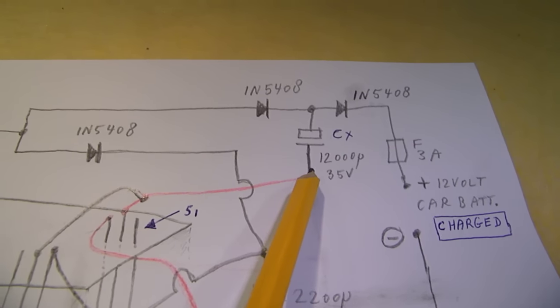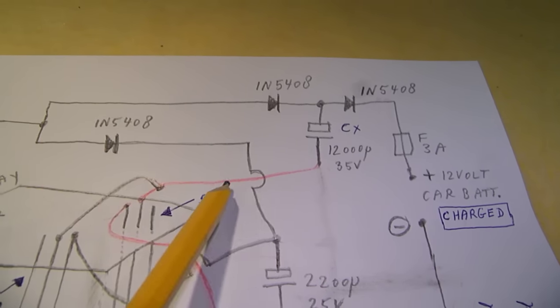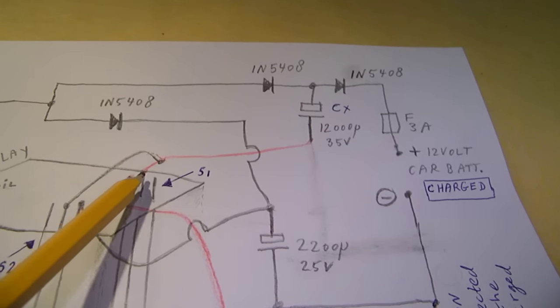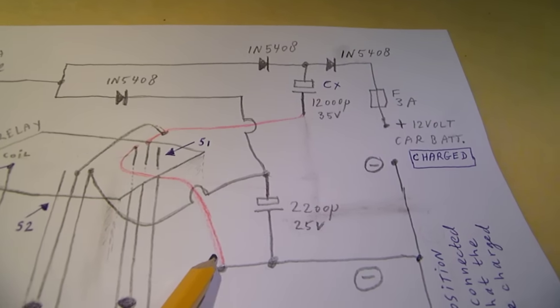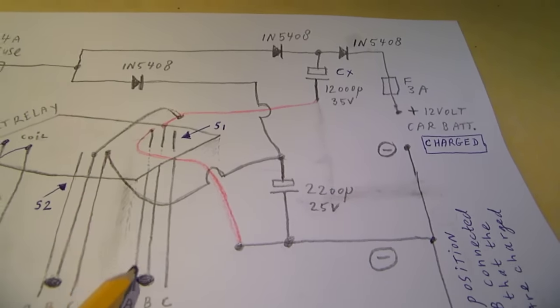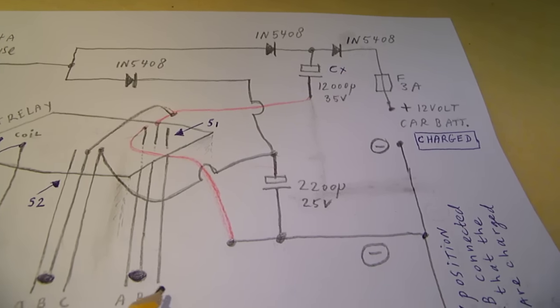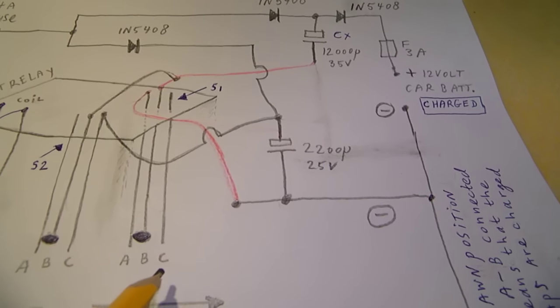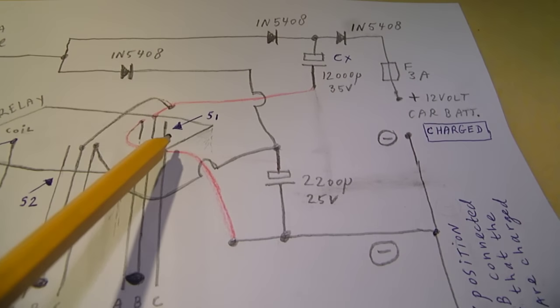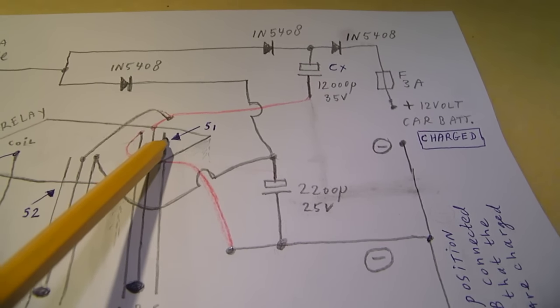At the same time, this capacitor is disconnected from the minus. Because here and here, no current can flow when B and C are connected.